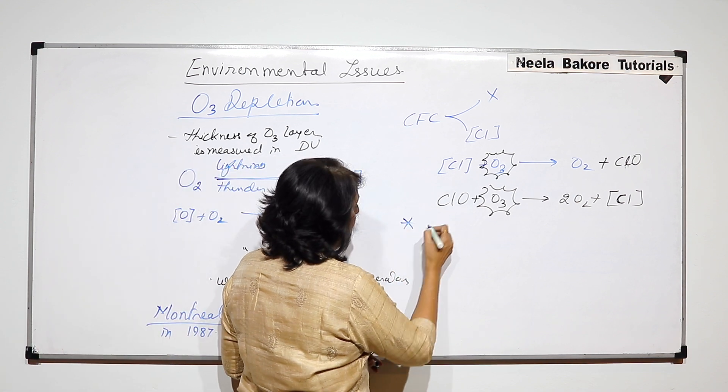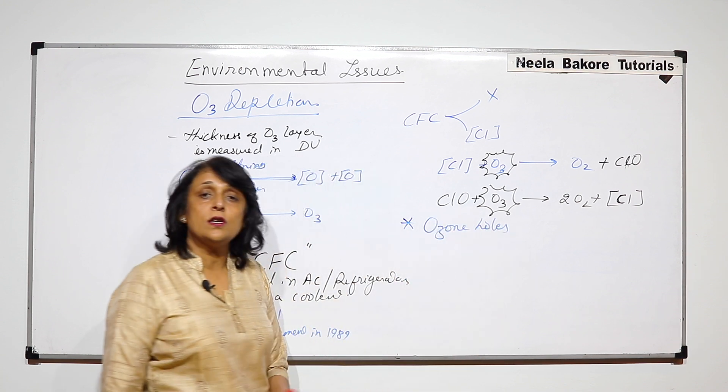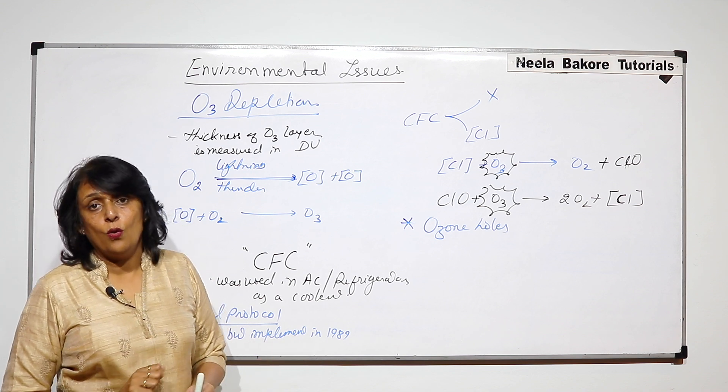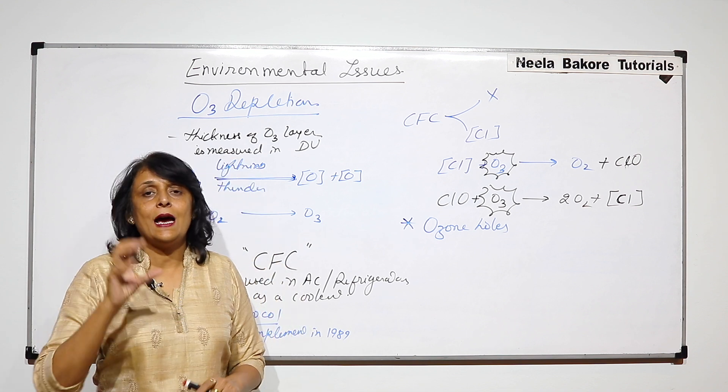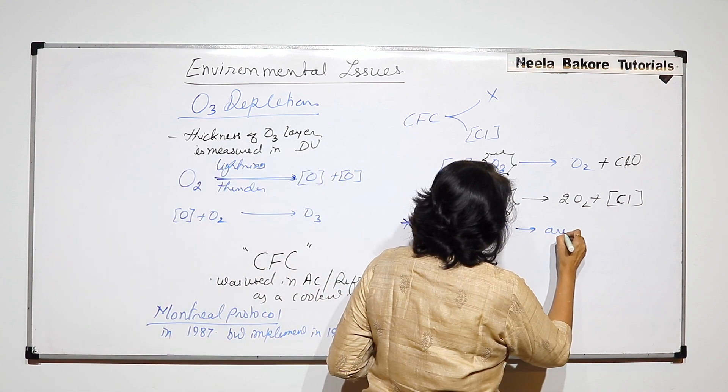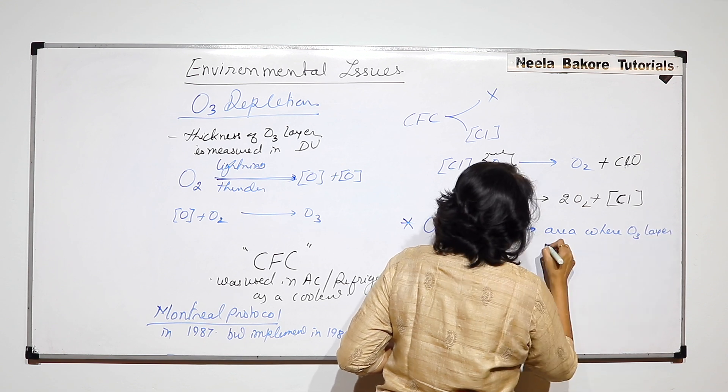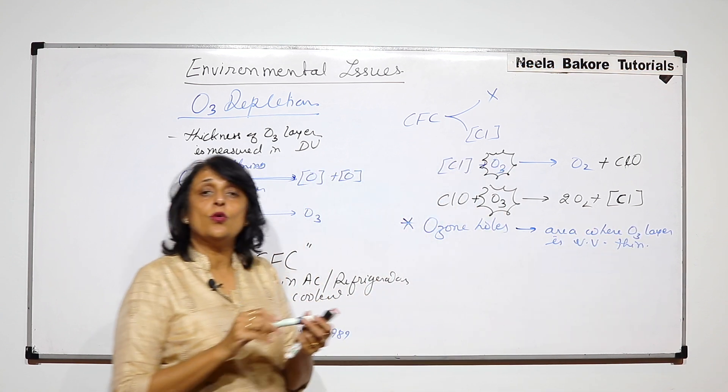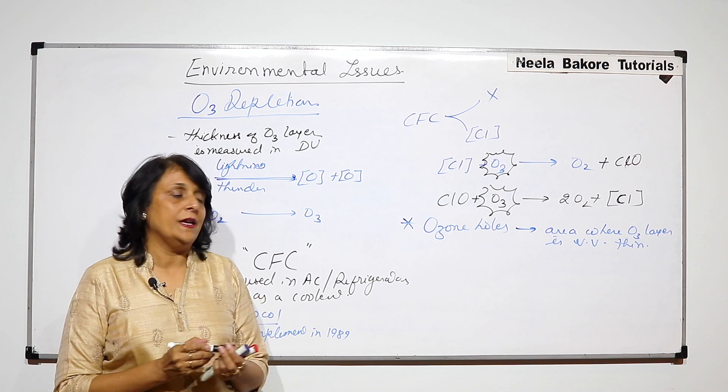What is an ozone hole? Like on Antarctica, there is an ozone hole. Ozone hole is not a hole actually in the layer. It is that area where the ozone layer becomes extremely thin, very, very thin and this ozone layer is actually a protective layer for us. It protects us from UV rays.